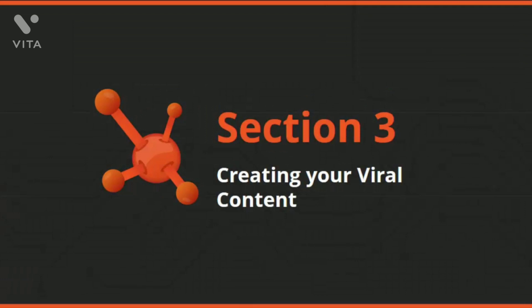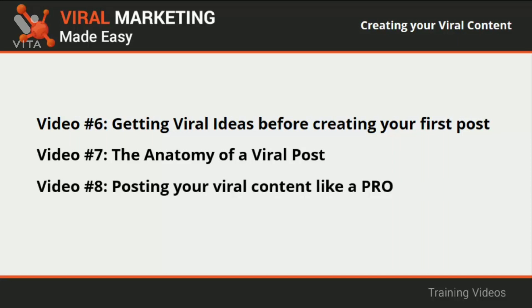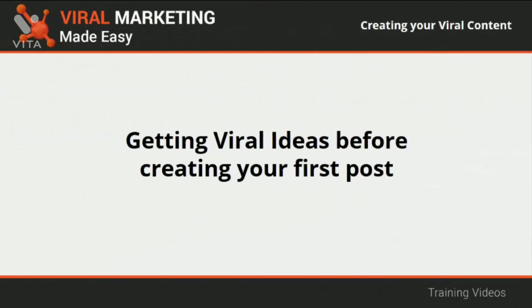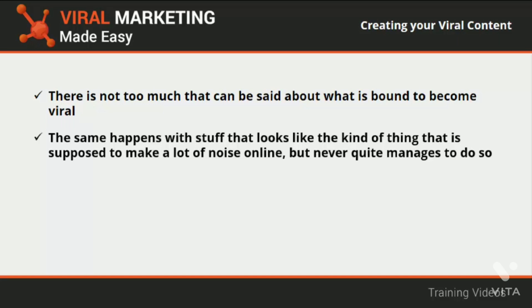Welcome to section 3 of our viral marketing video training. In this section we will talk about getting viral ideas before creating your first post, the anatomy of a viral post, and posting your viral content like a pro. Although viral content needs to be emotional to become viral, there is not too much that can be said with certainty about what is bound to become viral — there is no surefire way to know if something will become wildly popular just by looking at it. Things that seem insignificant can become huge overnight hits, and vice versa.